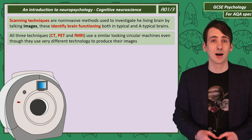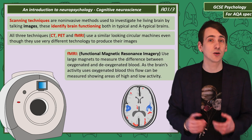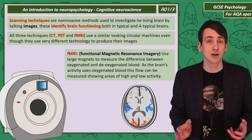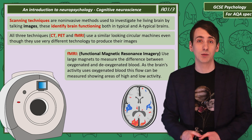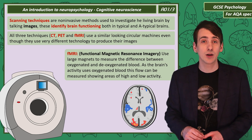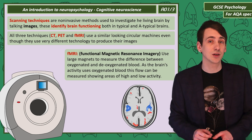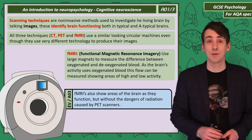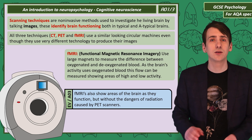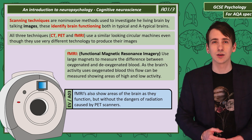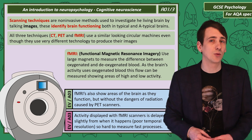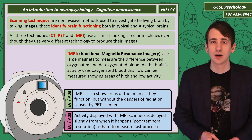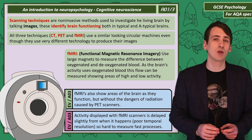The last scanner is the fMRI, standing for functional magnetic resonance imaging. This scanner uses large magnets to measure the difference between oxygenated and deoxygenated blood. As active brain regions need oxygenated blood, these areas show up in an fMRI scan. The advantages are that fMRIs show brain activity and don't have the dangers of using radiation. The downside is that images are slightly delayed from when the activity actually happens, meaning they have poor temporal resolution, making it hard to measure fast mental processes.